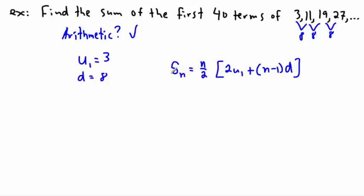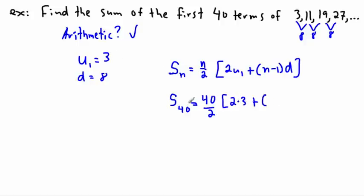Now I want the sum of the first 40 terms, so I want S₄₀. Because of that, n is 40. So instead of n I put in 40: 40 divided by 2, all that times 2 times u₁ which is 3 — so 2 times 3 — plus, in this case, 40 minus 1, all that times d which is 8.